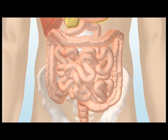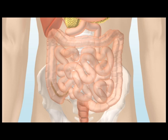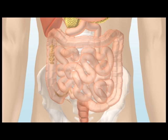In the large intestine, also called the colon, water and salts are absorbed, causing the waste products to become firmer and turn into stool.